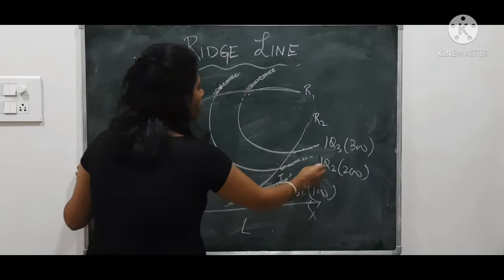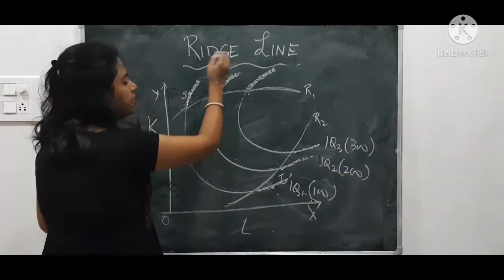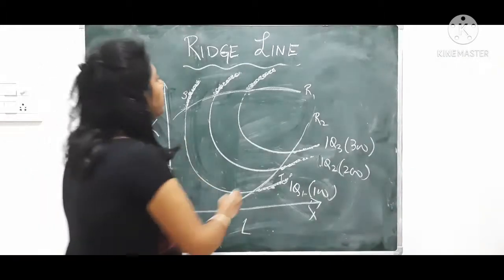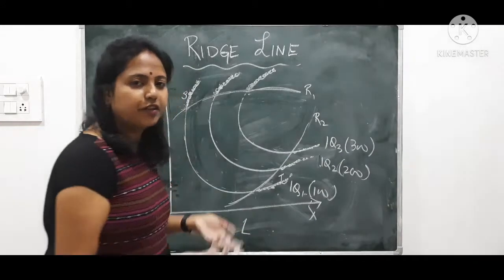This is IQ 2 which can produce 200 units. Any point on this curve will produce 200 units. This is IQ 3. Any points in this curve will produce 300 units.